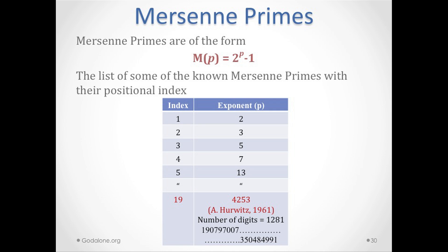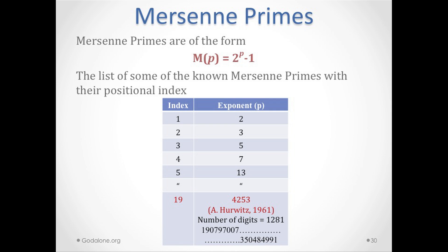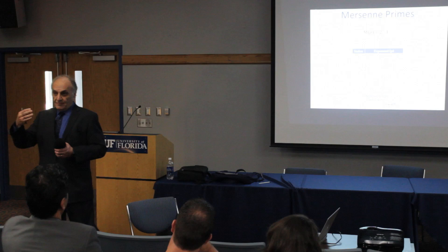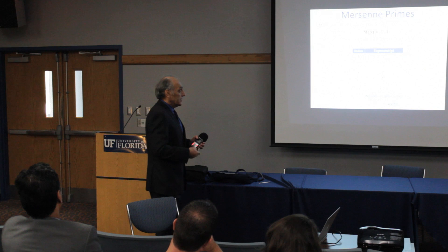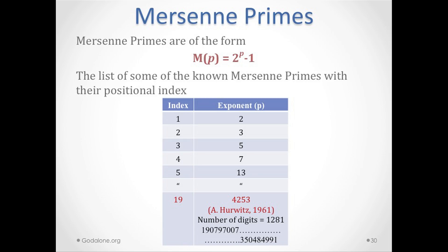The first Mersenne prime has exponent 2, so 2 squared minus 1 equals 3. They grow very fast. Note the complexity: not every prime used as an exponent will yield a Mersenne prime. The 4th Mersenne prime has exponent 7, and the 5th has exponent 13, not 11. So 2 to the 11th power minus 1 is not a Mersenne prime — it's composite. The next exponent is 13.